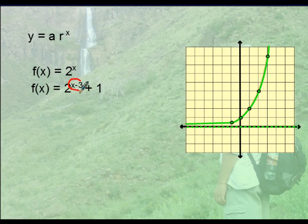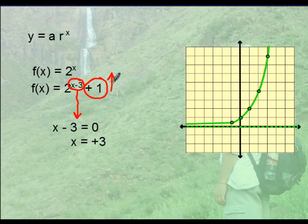Since you have this exponent here, whatever is with x essentially is going to tell us which way this thing is going to shift. Take this value and set it equal to 0. And when you solve for x, you get 3. That's positive 3 units and that we will be shifting this graph to the right. For the vertical shift, whatever number is out here basically tells us what you see is what you get. It says plus 1. That means you're going to move it up 1 unit.